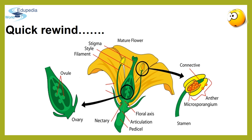But before beginning with the new session, let's have a quick recap of the topics learned previously. Earlier, we have thoroughly discussed about the structure of a flower, its various parts, the male and the female reproductive parts, and the accessory parts of a flower like calyx, corolla, and also the variations in the structures.